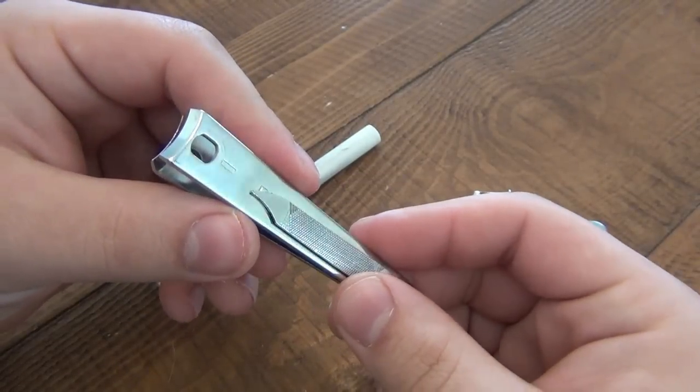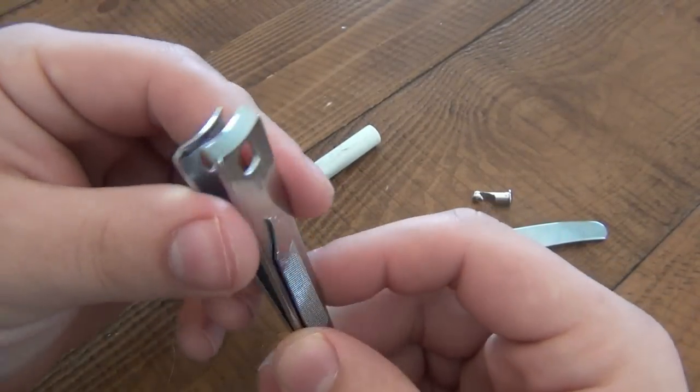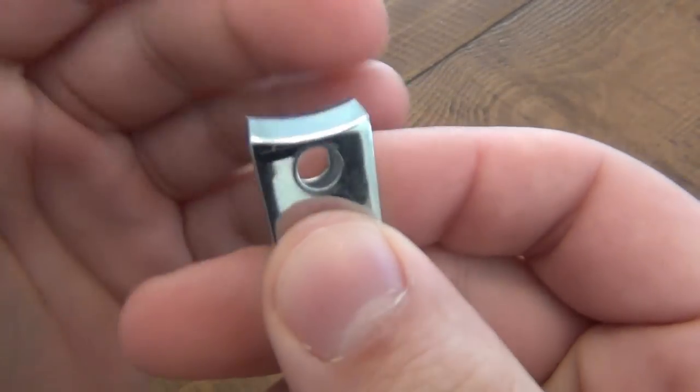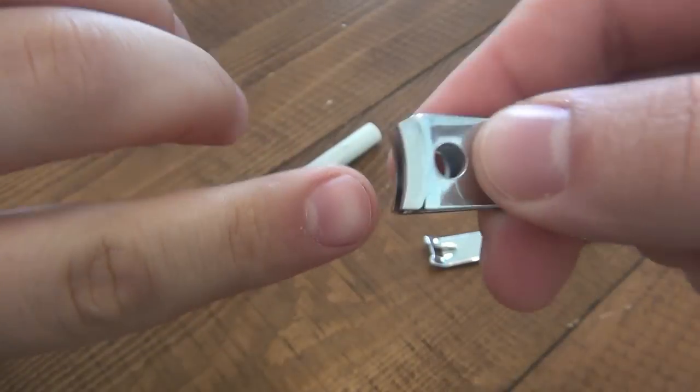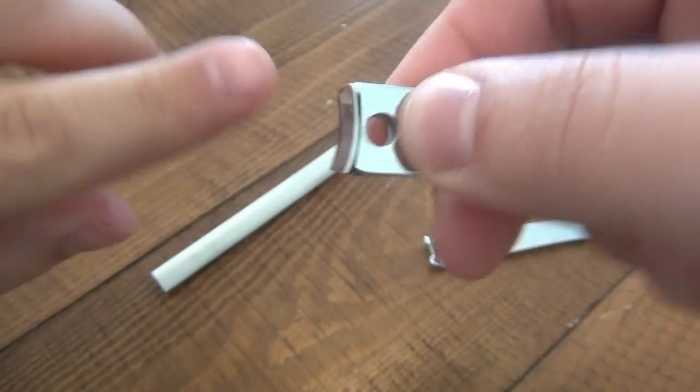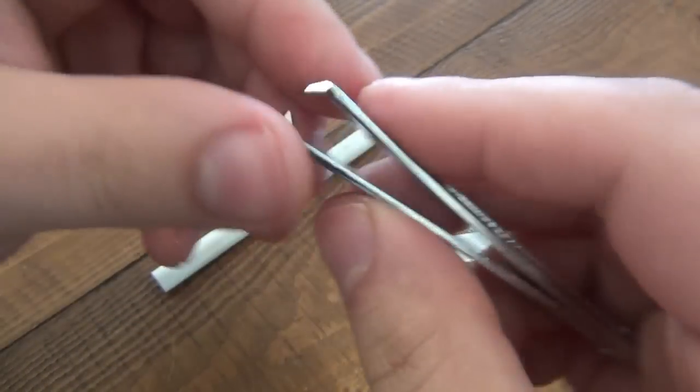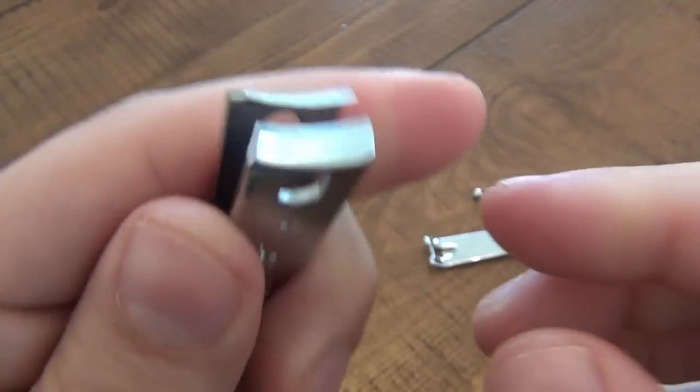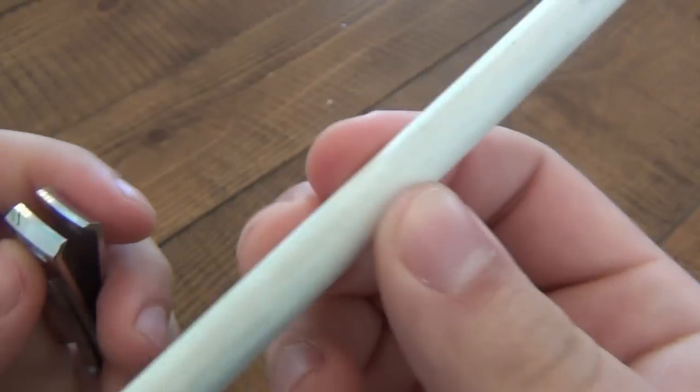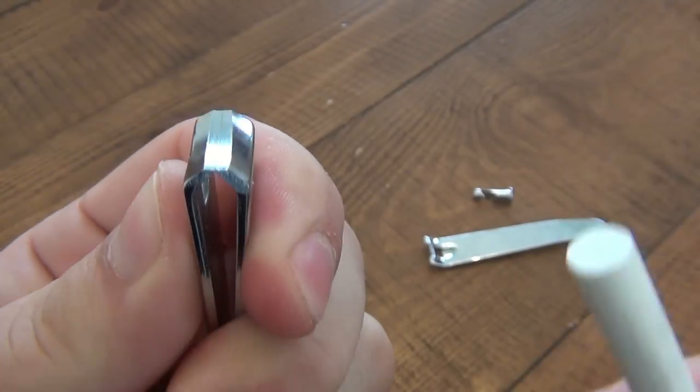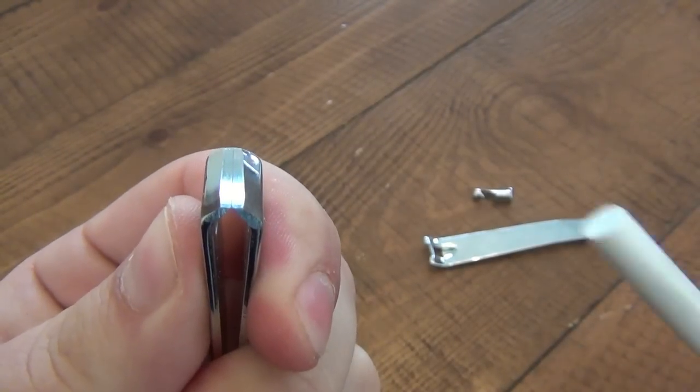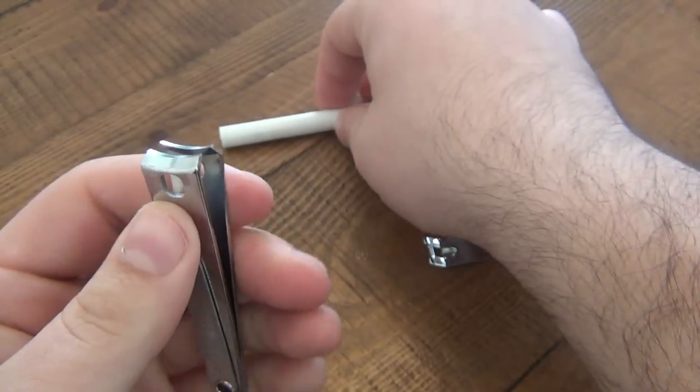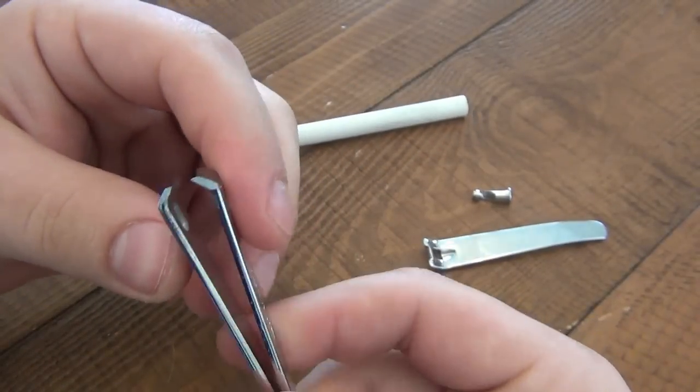But basically, this is what we have: two angled blades. It obviously conforms to the curvature in your nails, your toenails for this particular one. All you have to do to sharpen these is run a ceramic rod across them. Pinch them together, run a ceramic rod across them back and forth.